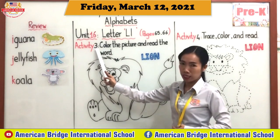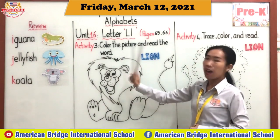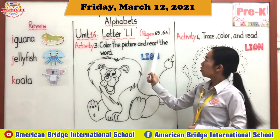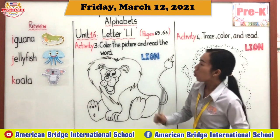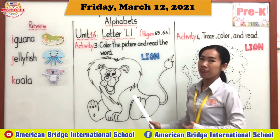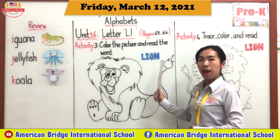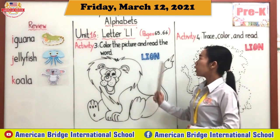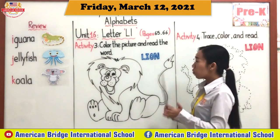Together: Activity 3. Color the picture and read the word. What — who can tell teacher what is this? Yeah, it is lion. Please say together: lion. L-I-O-N, lion. One more time: lion, L-I-O-N, lion. Okay, you know the lion already.